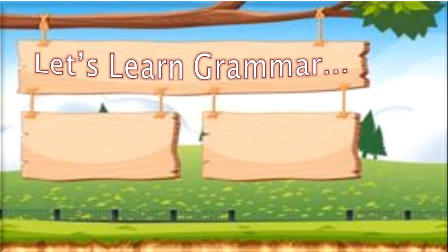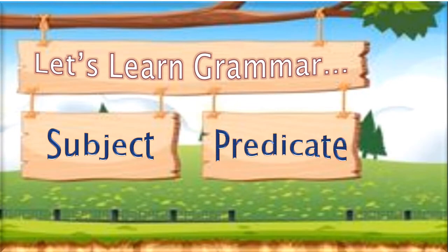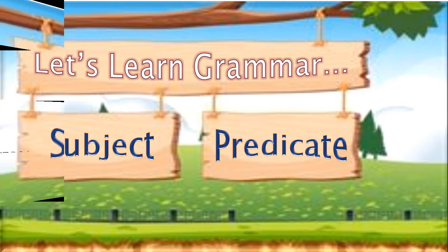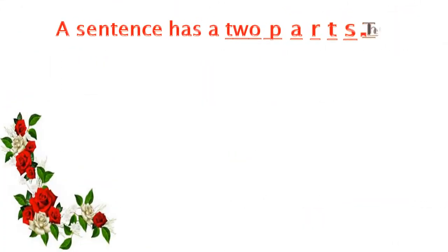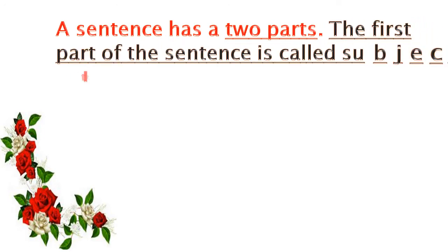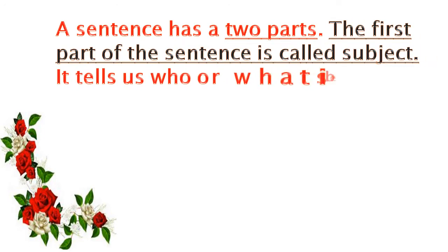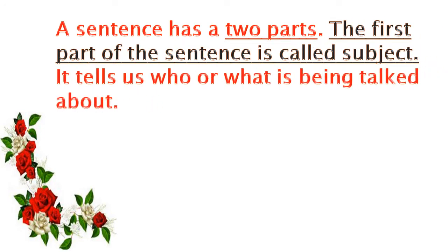Let us learn grammar. Now we are going to learn about subject and predicate. A sentence has two parts. The first part of the sentence is called the subject. It tells us who or what is being talked about.